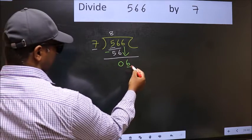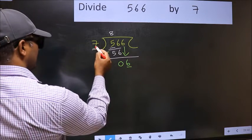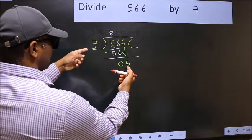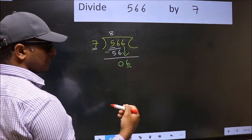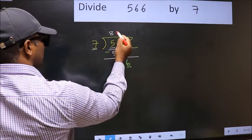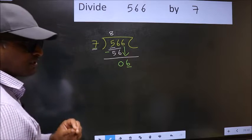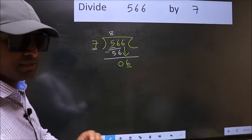Here we have 6 and here 7. 6 is smaller than 7. So what many do is they directly put dot and take 0 which is wrong. Why is it wrong?